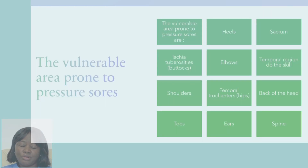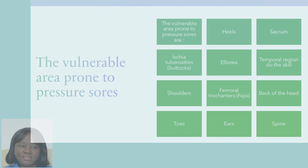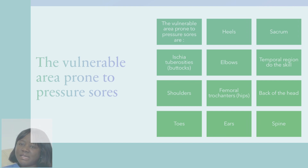Let's make sure we cover the areas that are prone to pressure sores. The heels, the sacrum, ischial tuberosity, the elbows, temporal region, shoulders, femoral trochanter, hips, the toes, the ears, the spine. There are more, but that would be enough — eight points and you are good to go.